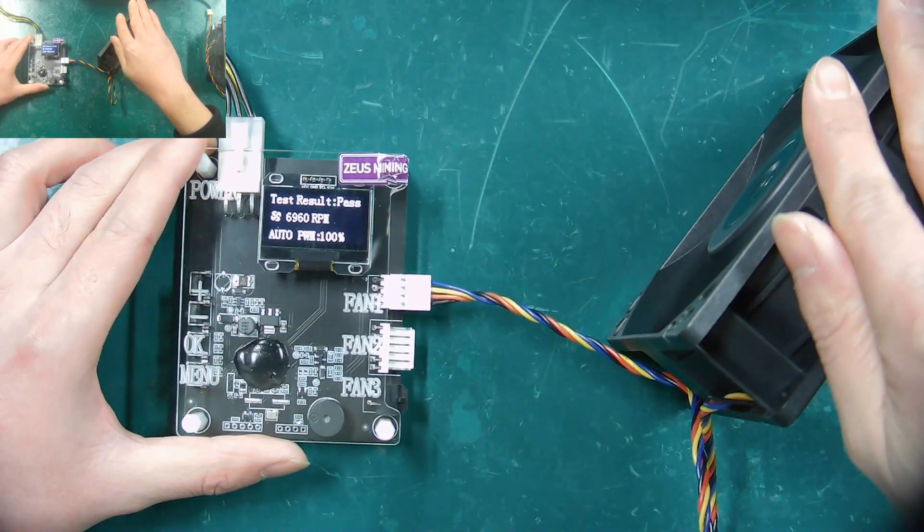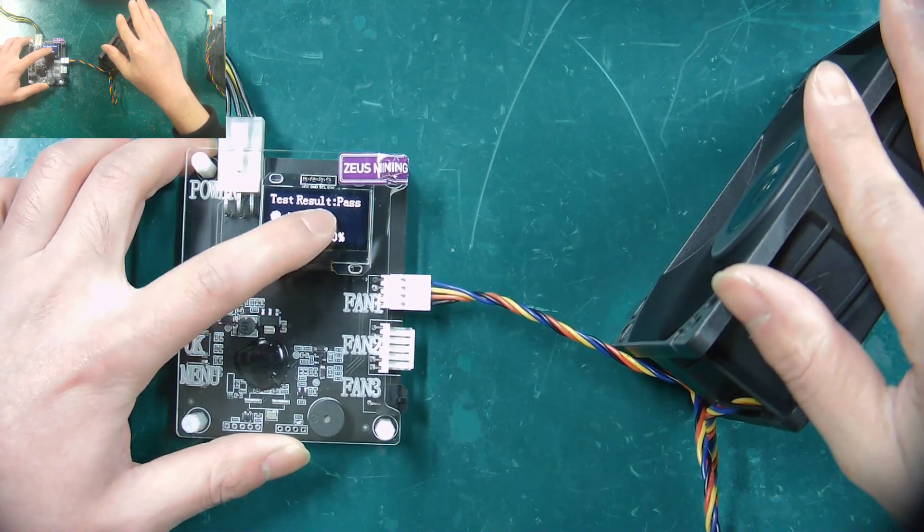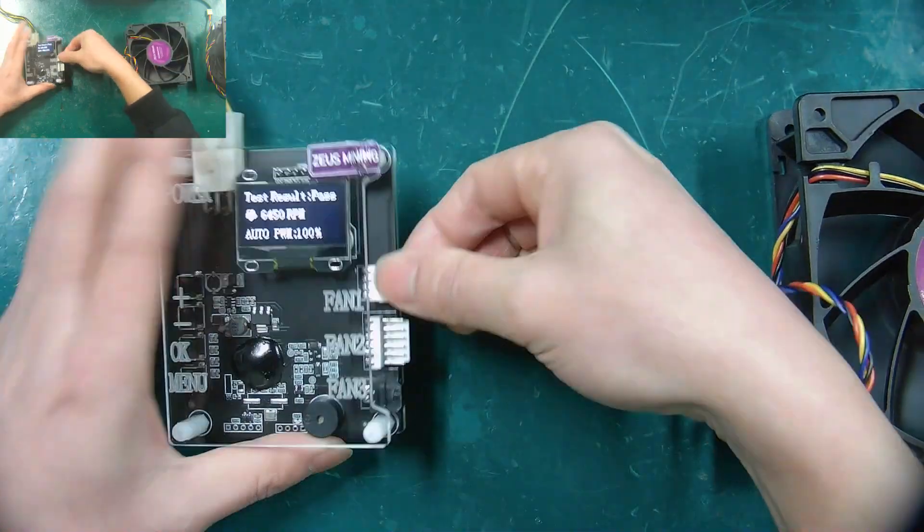You can see that the screen of the tester is displaying the results. If pass is displayed, it means that the fan is normal.